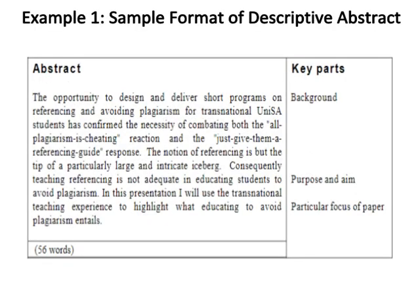Example one: sample format of a descriptive abstract, in which key parts — background, purpose and aims, and particular focus — are identified. There are 56 words in this sample format of a descriptive abstract for a humanities paper.